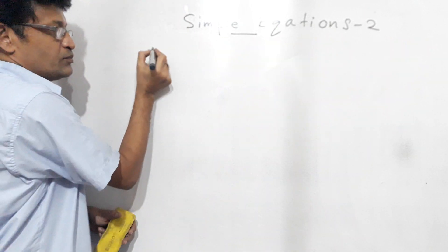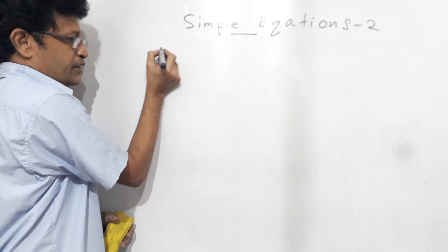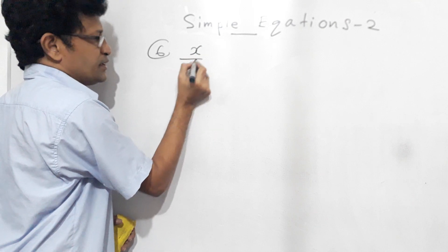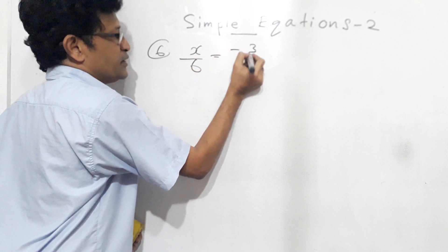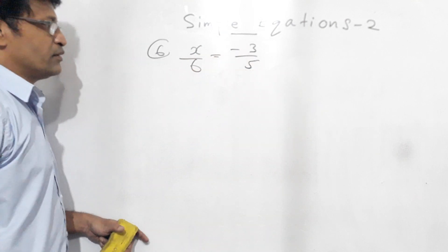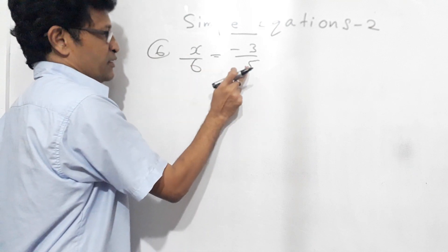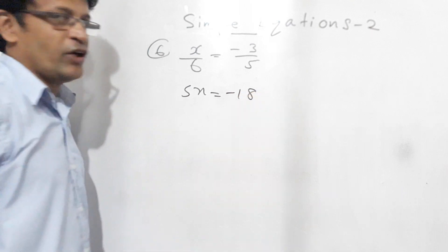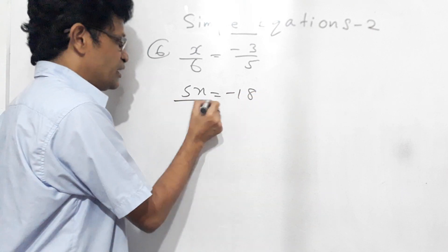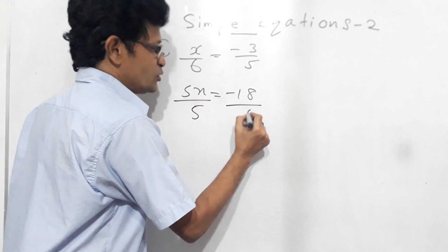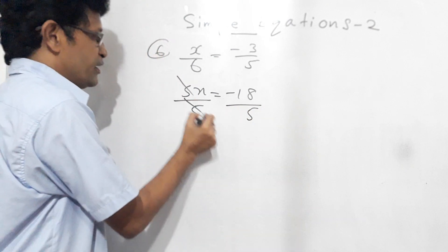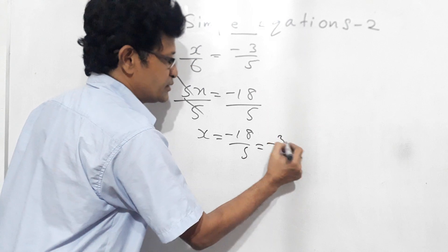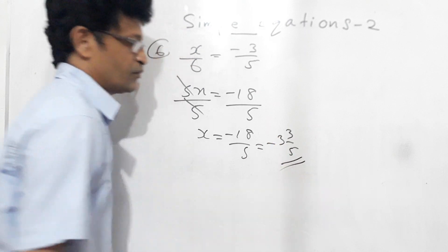Now the sixth question: x over 6 equals minus 3 over 5. Cross multiply: 5 into x gives 5x, equals 6 times minus 3, which is minus 18. To get rid of this 5, divide both sides by 5 — the 5s cancel — so x equals minus 18 over 5, that means minus 3 and 3 fifths.